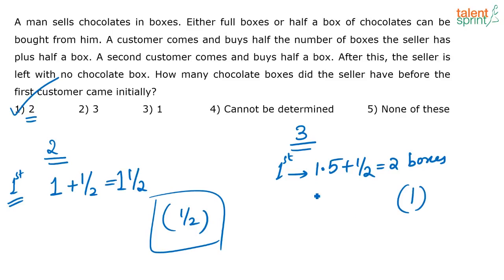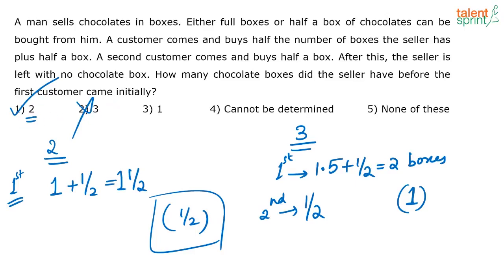The next customer comes and buys half a box. So the seller had one box, the second customer buys half, and the seller is left with half a box — which cannot be zero. So the correct answer cannot be 3. It has to be 2 boxes.